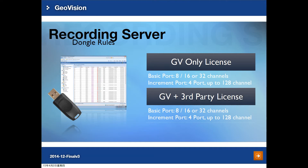For the Recording Server dongle, there are two types of licenses: one for GV IP devices only, and one for GV IP devices plus third party cameras. The basic number of ports available is 8, 16, or 32 channels with increments of 4 ports, up to a maximum of 128. This applies to both the GV-only license and the GV plus third party license.